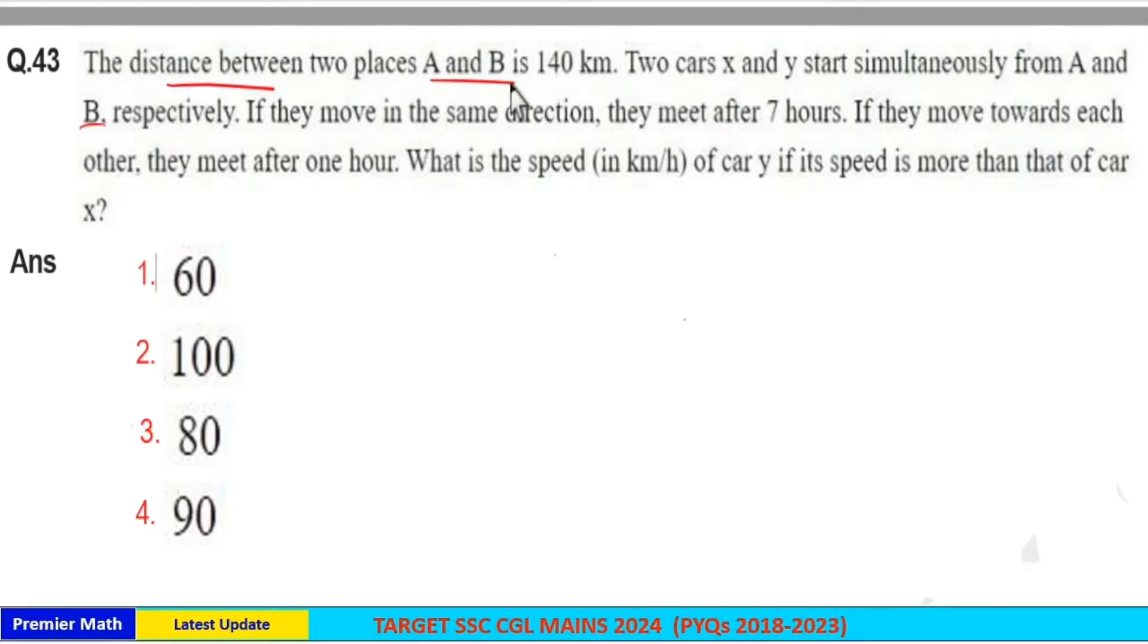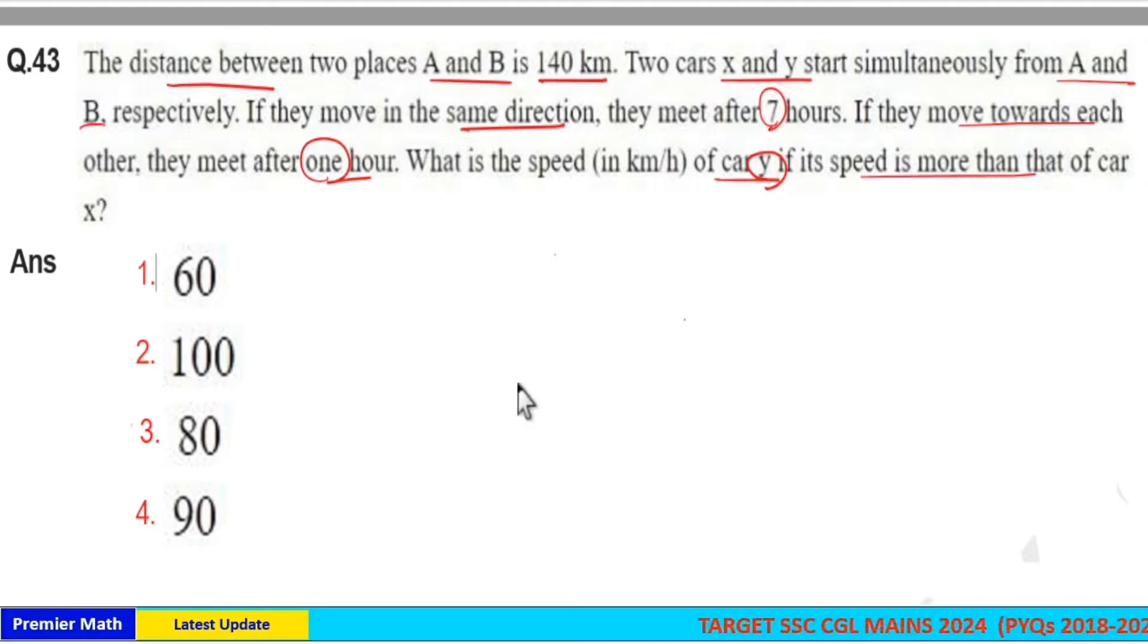The distance between two places A and B is 140 km. Two cars X and Y start simultaneously from A and B respectively. If they move in the same direction, they meet after 7 hours. If they move towards each other, they meet after 1 hour. What is the speed of car Y if its speed is more than that of car X?